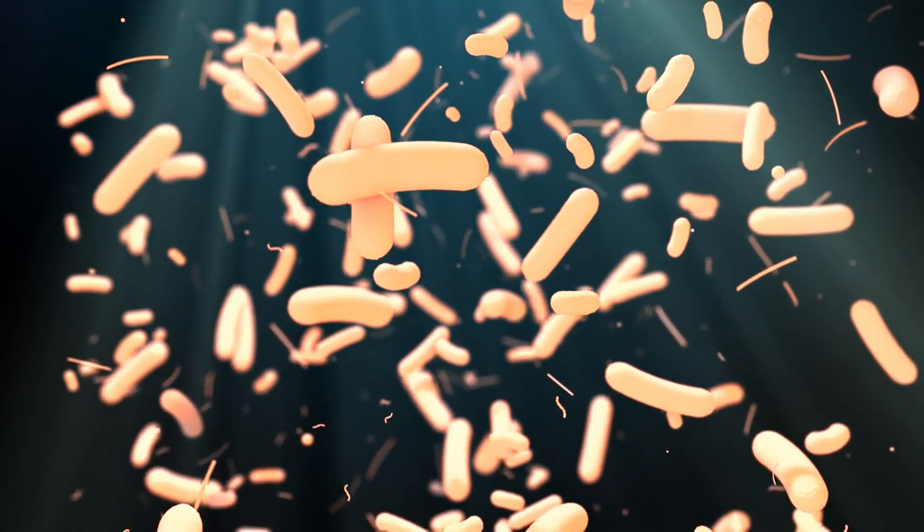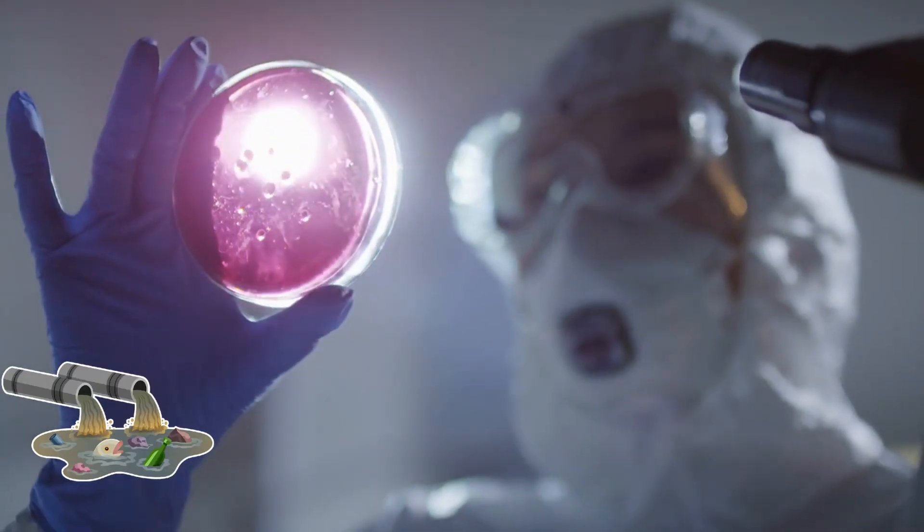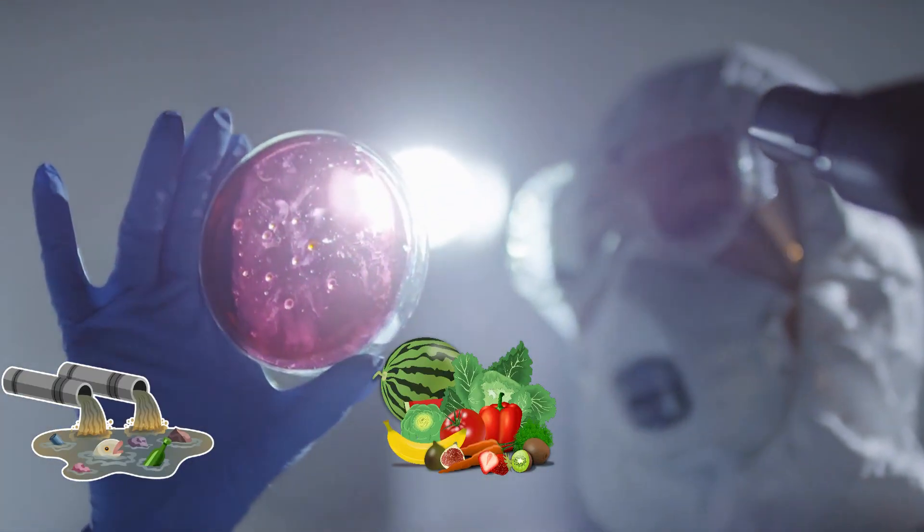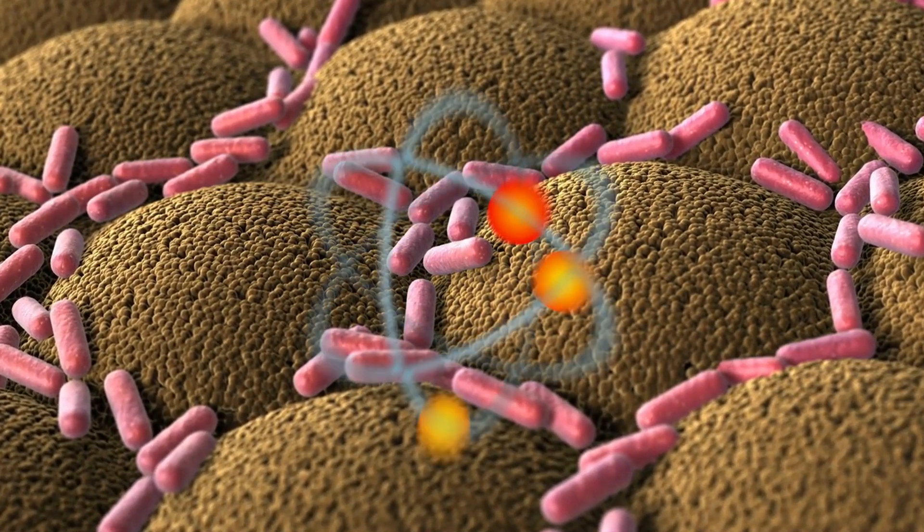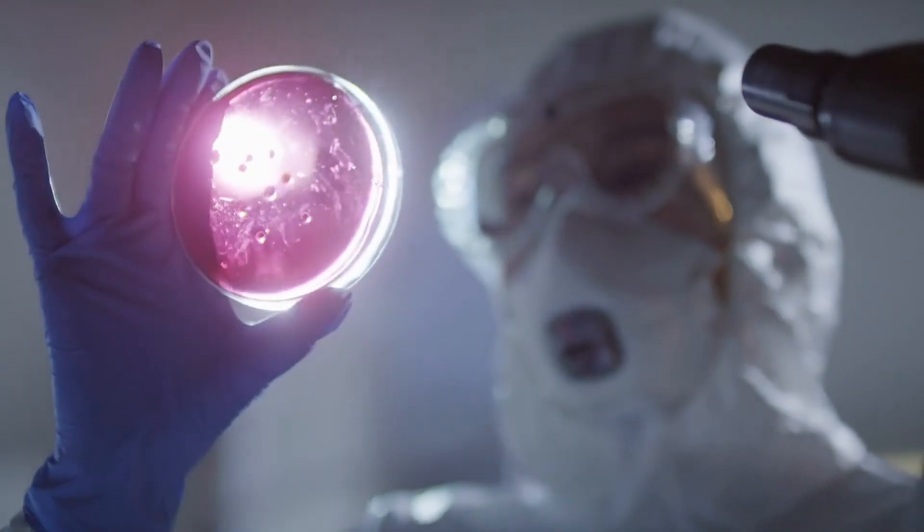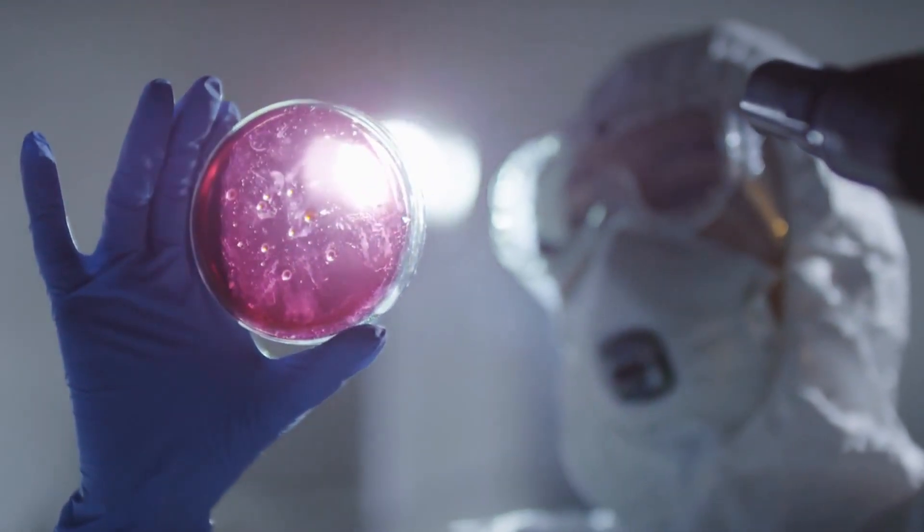Bacteria feed on waste material like sewage, food scraps, or even dirty water, and during the digestion process they release electrons. Those electrons are captured and converted into electricity.